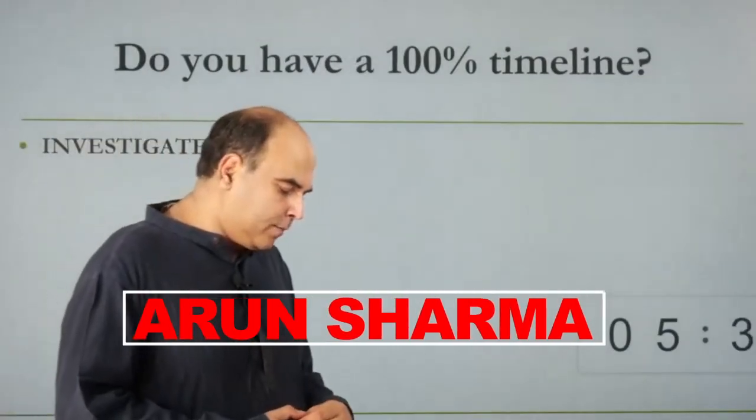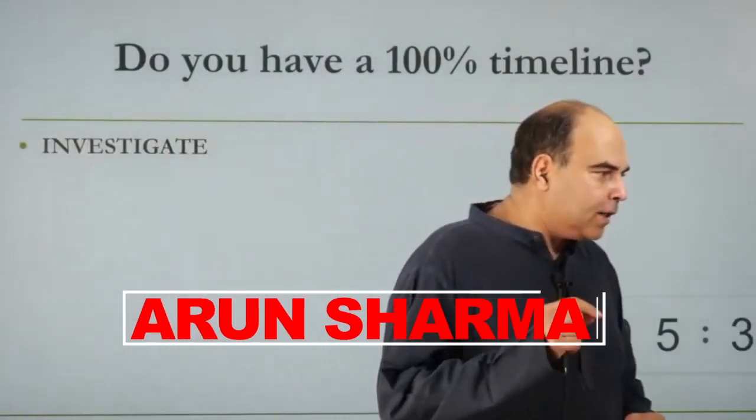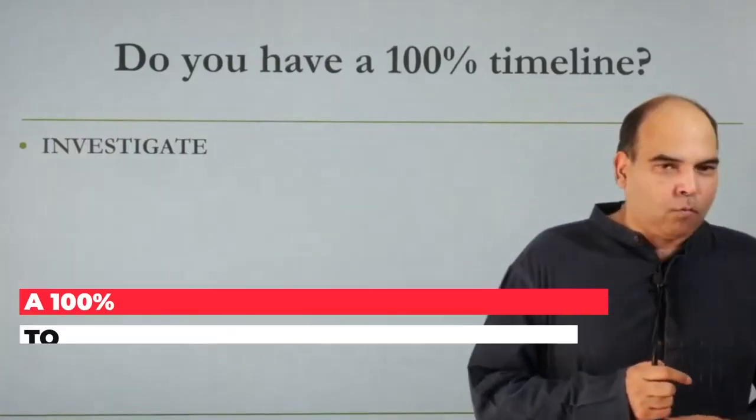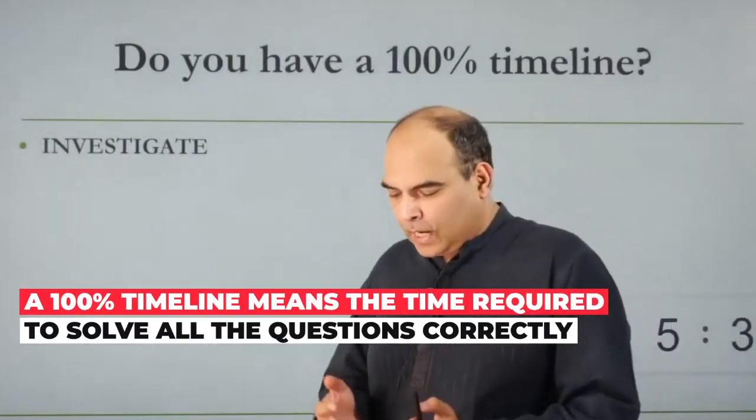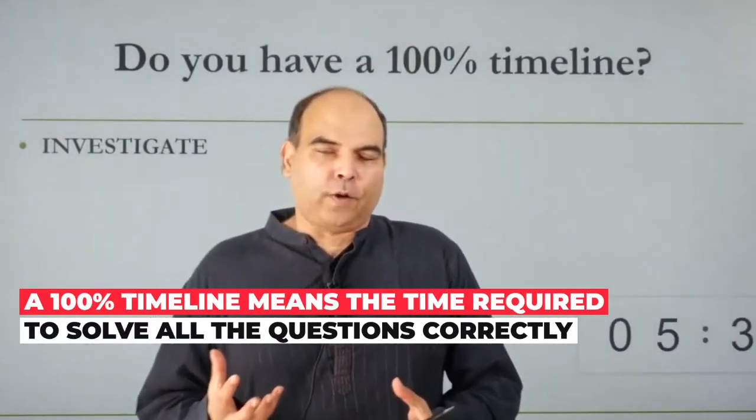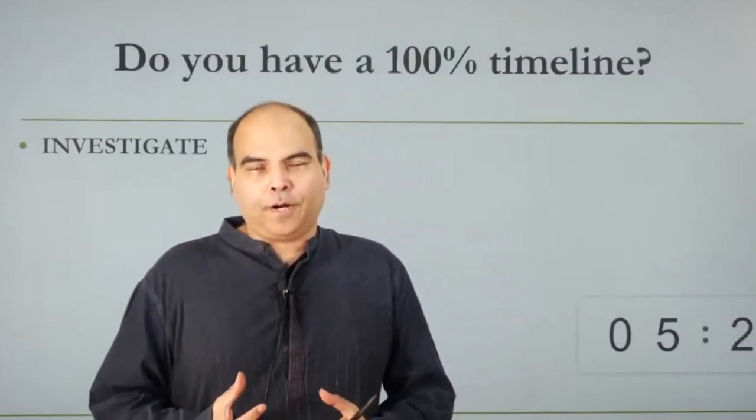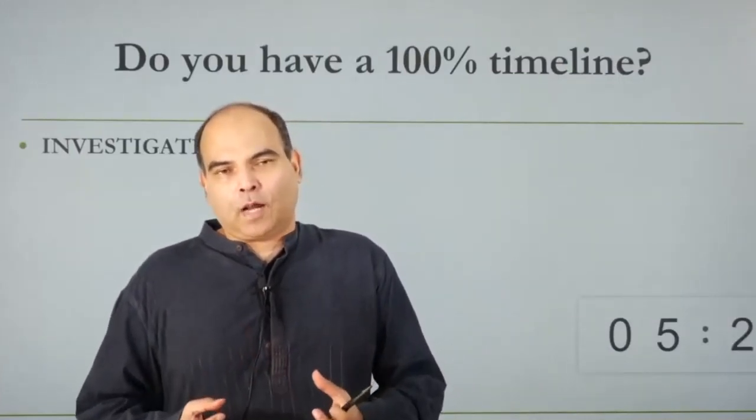Do you have a 100% timeline? The 100% timeline, as I had explained to you, is the timeline required for you to get 100% of a comprehension question correct. I'm talking about comprehension here because all the question types in verbal nowadays in CAT are essentially around comprehension only.